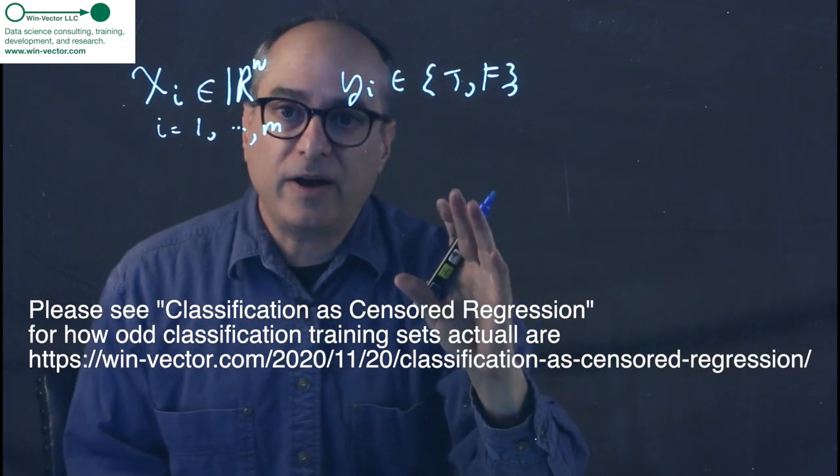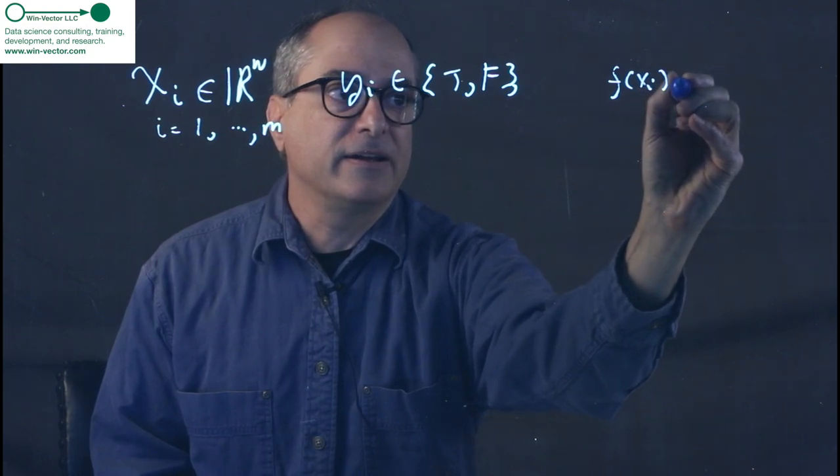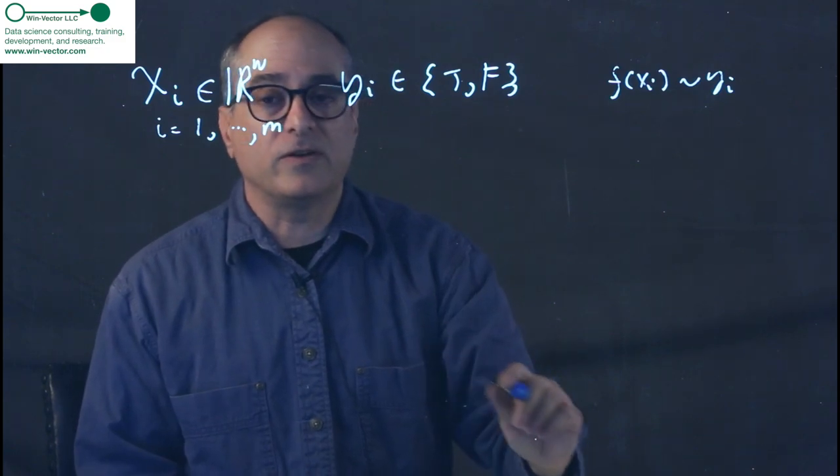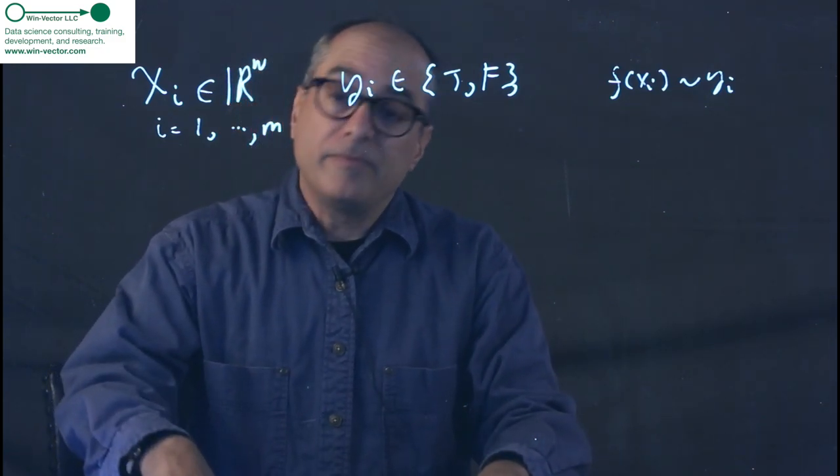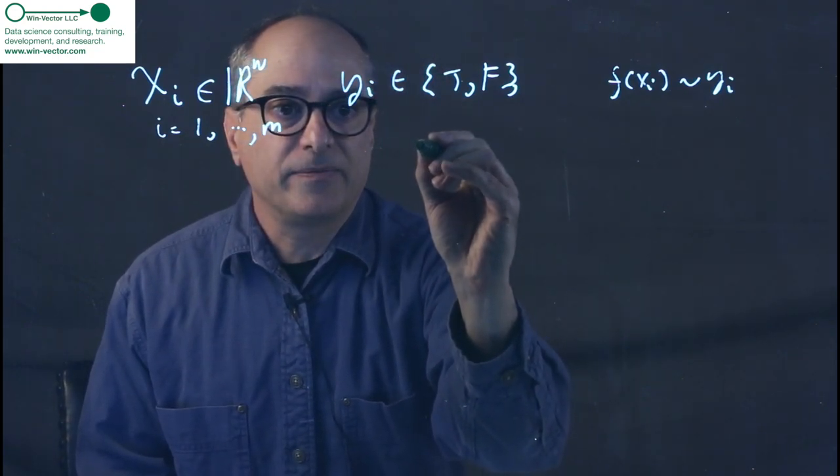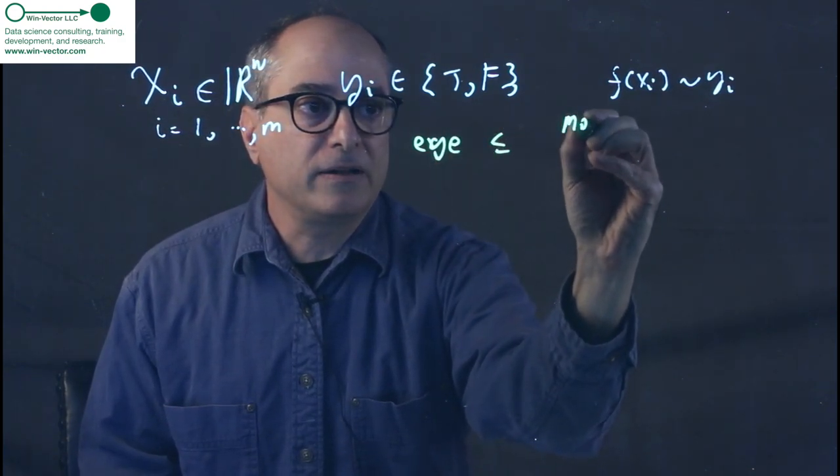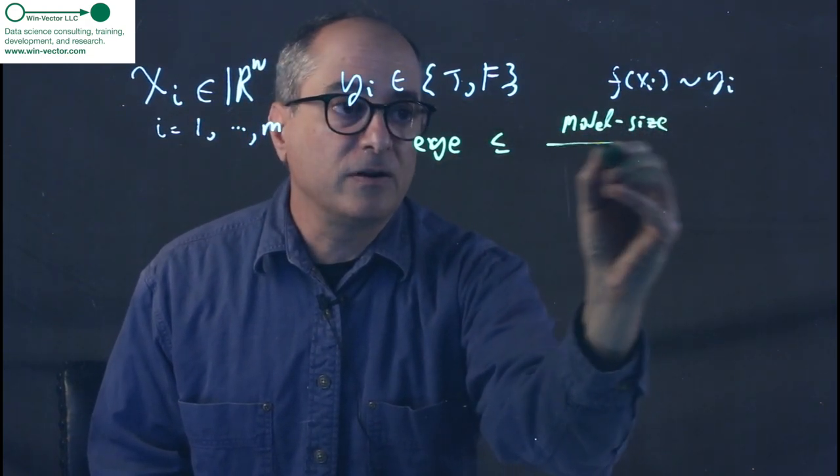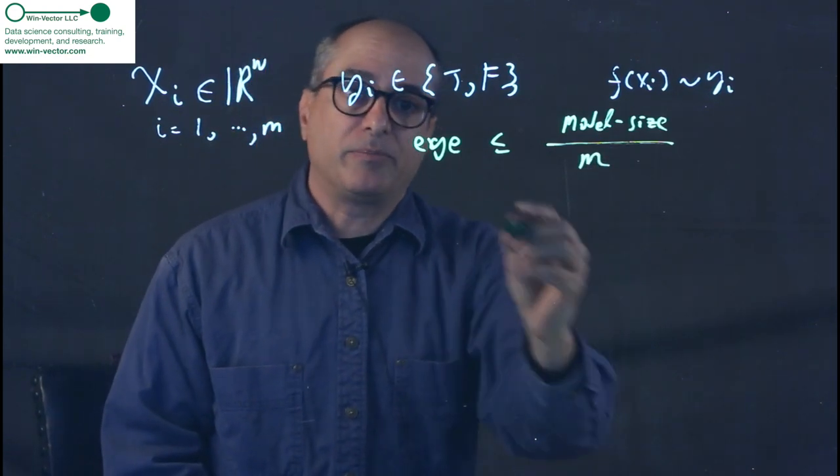This is called a supervised machine learning problem because we want to find a function such that f of Xi is approximately Yi, or very often completely agrees with it since it only takes two values. There's a common theorem that you see quite around, is that excess generalization error is less than or equal to model size over m.